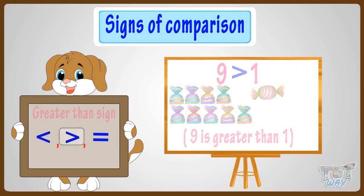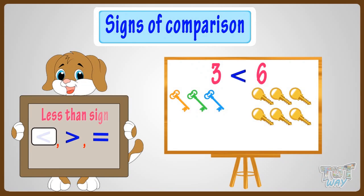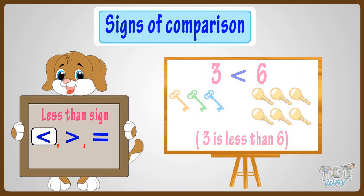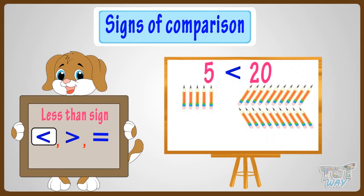And when a number is smaller than the other number, we use the less than sign like this. Three is less than six. One is less than nine. Five is less than twenty.